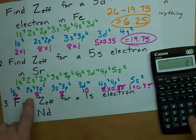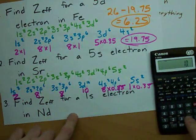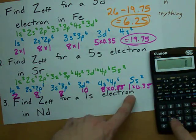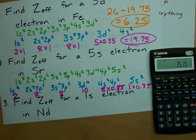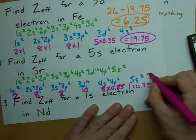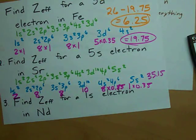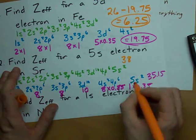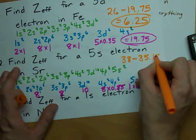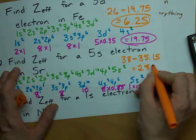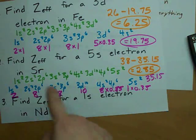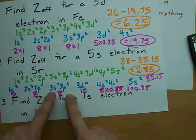We've got to add them all up. 2 and 8 and 8 and 10 and 8 times 0.85 and 1 times 0.35. Add all those up, you get 35.15. So the effective nuclear charge on the 5s electron in Sr is atomic number of Sr minus this shielding. When you do that, you end up with 2.85. A 5s electron hardly sees anything of the center. I guess that makes sense because it's so far away and there's all these other electrons blocking its view.